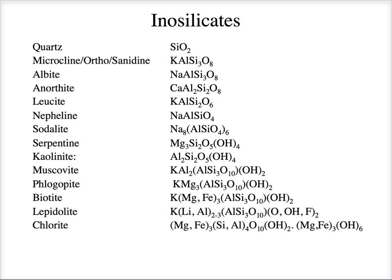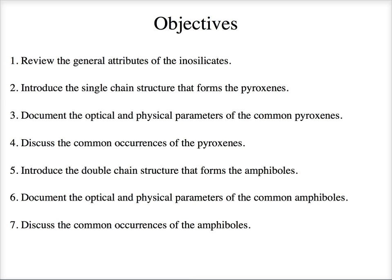Remember these chemical formulas we've already covered? We've covered the framework silicates — the tectosilicates — and the phyllosilicates, the sheet silicates. Today we're adding inosilicates to this list. Our objectives: review the general attributes of inosilicates, introduce the single chain structure that forms the pyroxenes, look at their optical and physical parameters, then do the same for amphiboles — introduce the double chain structure and look at where they occur.